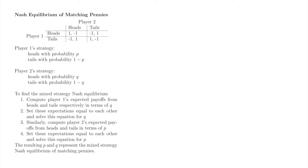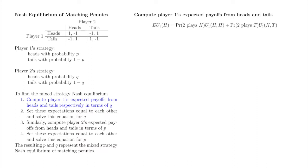We'll highlight our current step in blue. Player 1 is indifferent between heads and tails when her expected payoff of playing heads is equal to her expected payoff of playing tails. Therefore, our first step is to compute those expectations. Let's introduce some notation. EU1 denotes player 1's expected utility when player 1 plays heads. The first argument of U1 denotes player 1's action and the second argument of U1 denotes player 2's action.